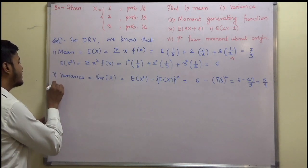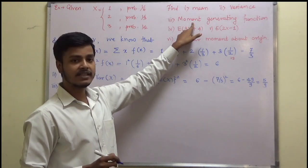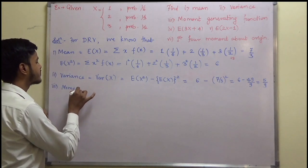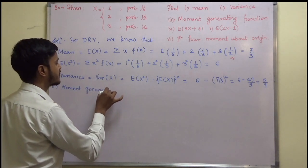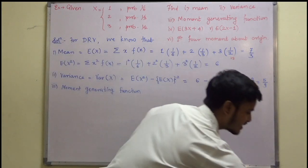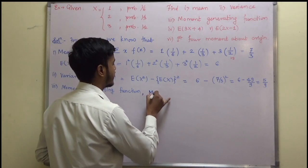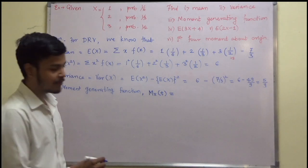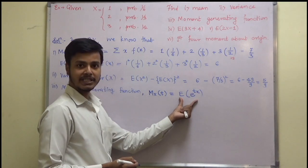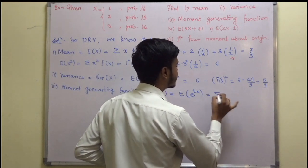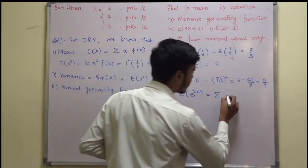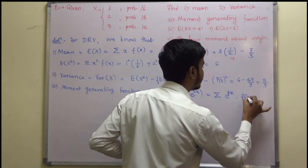Now let us find out the moment generating function. The definition we have already discussed in the last learning video. The moment generating function, denoted M_X(t), is nothing but the expectation of e^(tX). For a discrete random variable, this is written as summation e^(tx) · f(x).